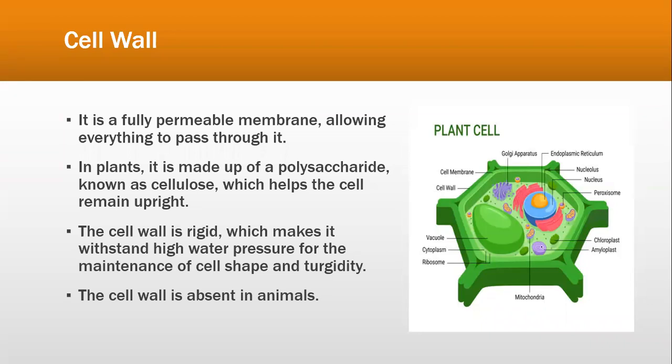The cell wall is a fully permeable membrane, allowing everything to pass through. In plants, it is made up of a polysaccharide known as cellulose, which helps the cell remain upright. In fungi it is made up of chitin, and in bacteria the cell wall is made up of peptidoglycan chains. The cell wall is rigid, which allows it to withstand high water pressure for the maintenance of cell shape and turgidity. It gives the plant its shape, keeps it upright, and helps in movement of substances in and out of the cells.